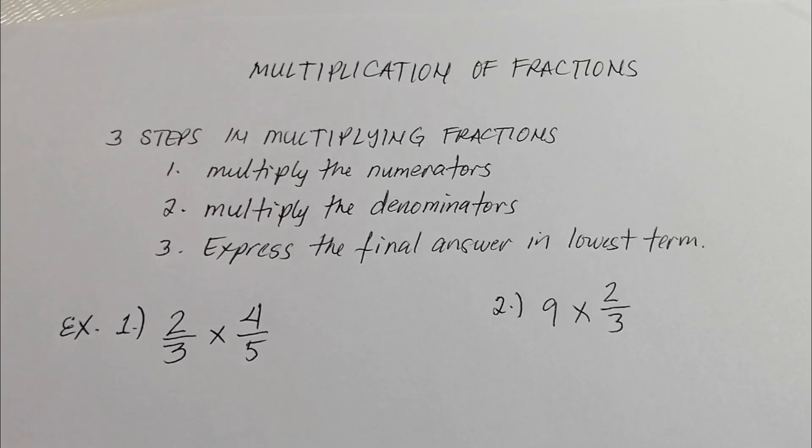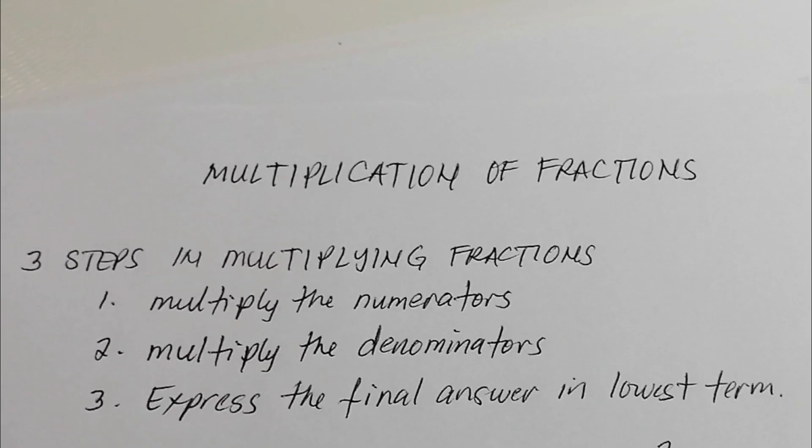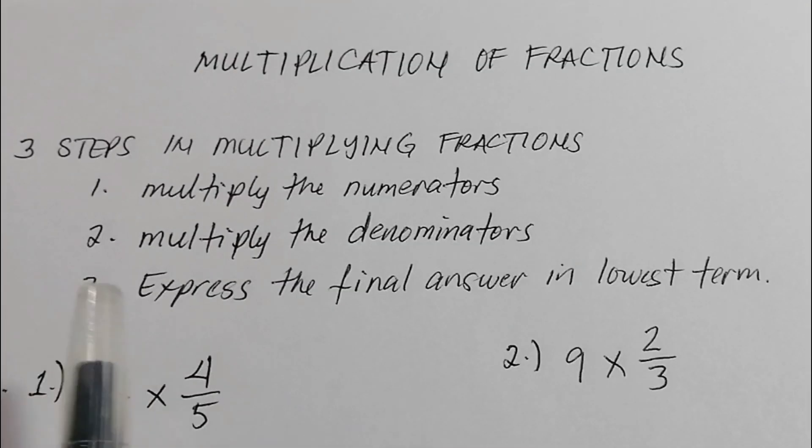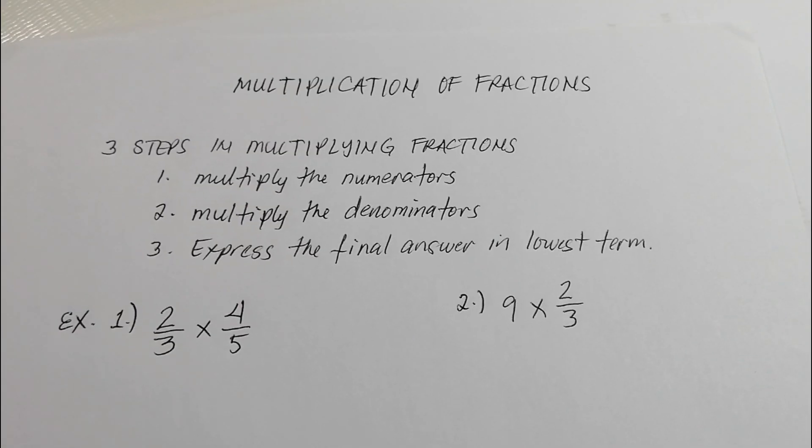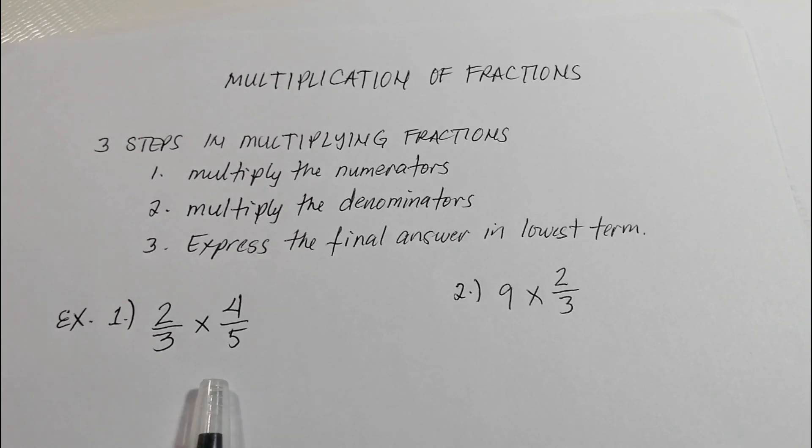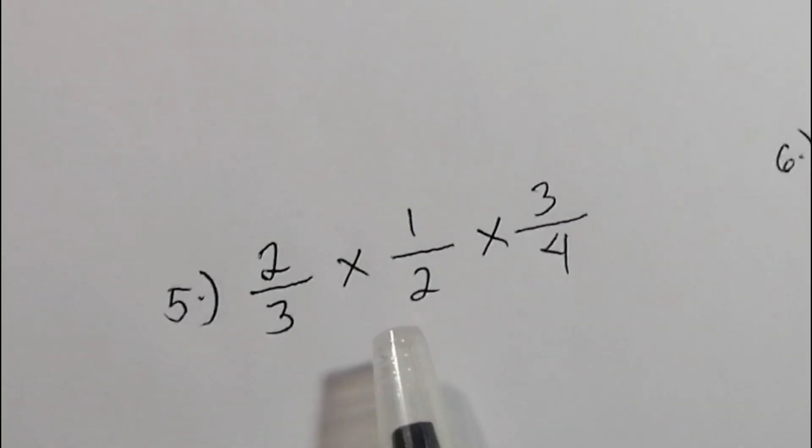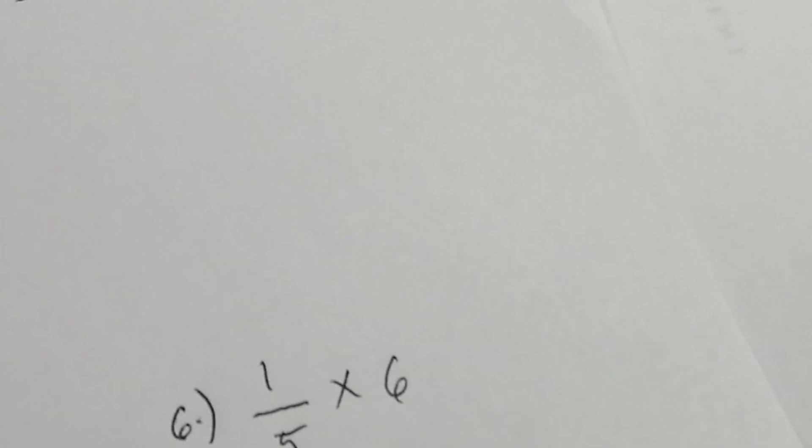Hey guys, are you ready? Now the topic that we're going to discuss is all about multiplication of fractions. We should know the steps in multiplying fractions. So we have three steps here. The first one is multiply the numerators. The second one is multiply the denominators. And then number three is express the final answer in lowest term. Now we have here some examples with dissimilar fractions, whole number and fractions, mixed fractions, multiple fractions to multiply, and fractions multiplied by whole number.